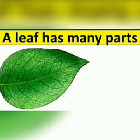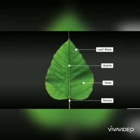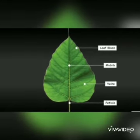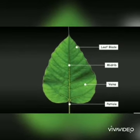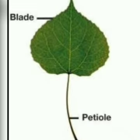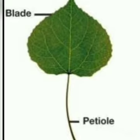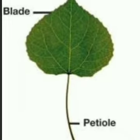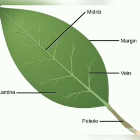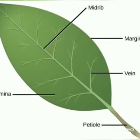A leaf has different parts: blade, vein, midrib and petiole. The flattened area of the leaf is called blade. The short stem of the leaf that attaches it to the main plant is called petiole. Have you ever noticed fine lines on the leaves? These fine lines are called veins.